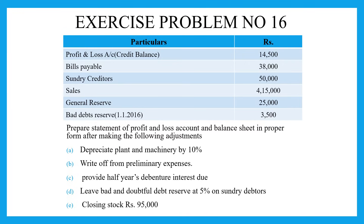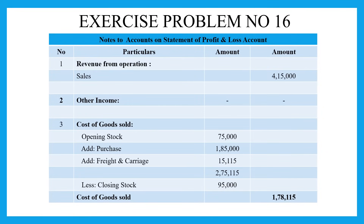Now we will look at the problem using the basic T-format profit and loss account — trading profit and loss account and balance sheet. We will work through notes to accounts on the statement of profit and loss account, looking at the same categories of direct and indirect expenses. First, we consider the income side, that is the credit side of the trading and profit and loss account.